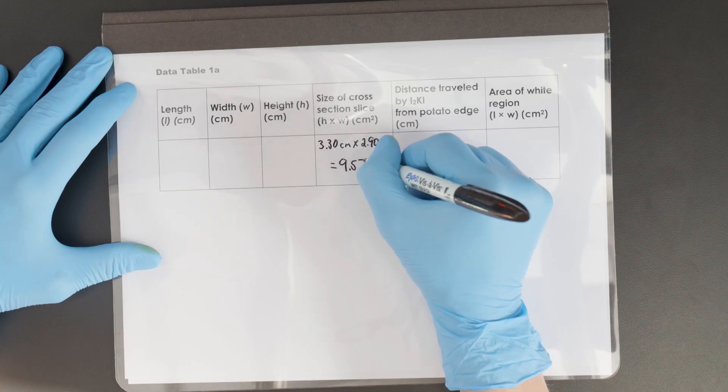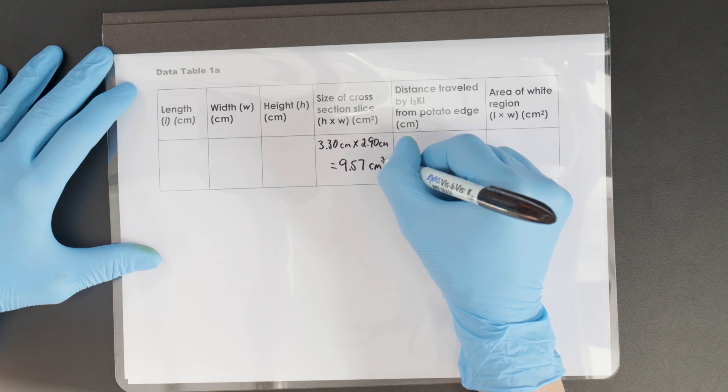Calculate the area of the cross-section by multiplying the length of the first side by the length of the second side.